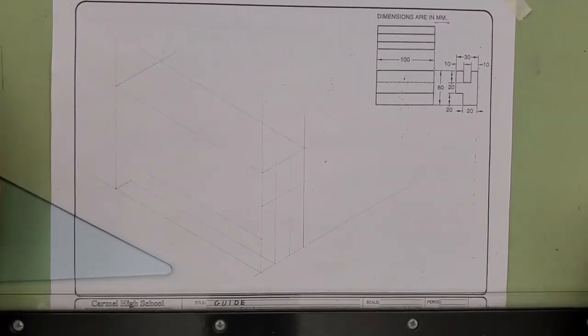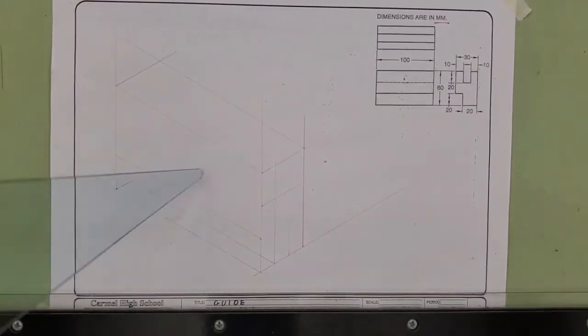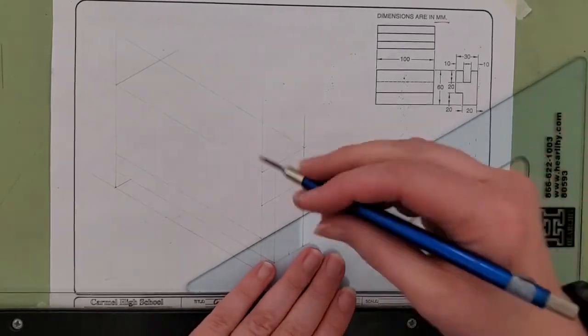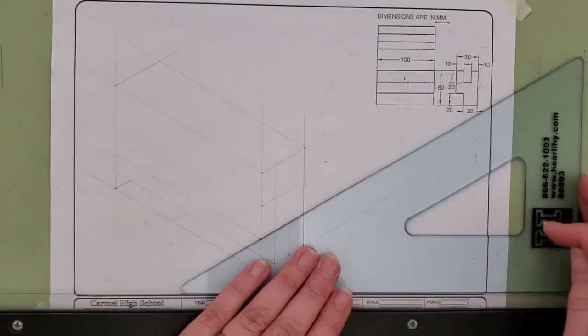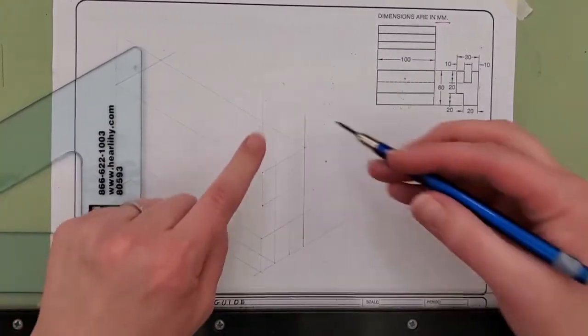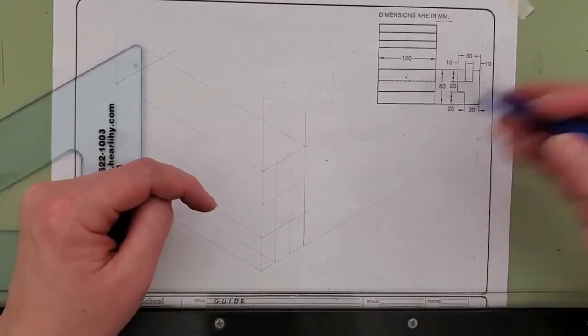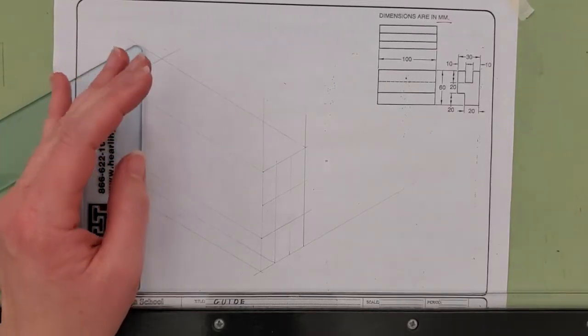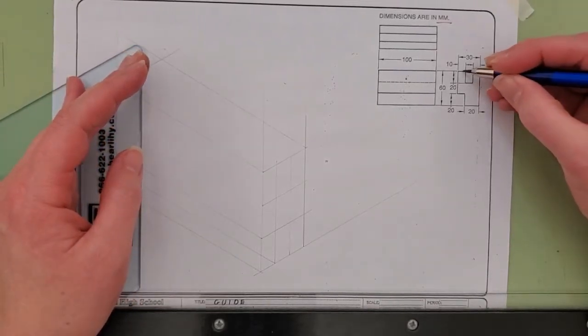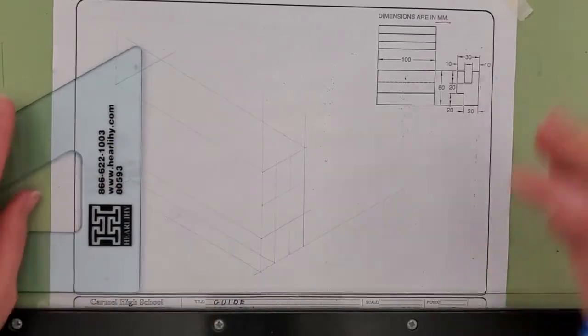I need to project it to the right also. So I've kind of divided this into a grid. So right now, things can get really confusing really fast. So I'm going to go ahead and darken in my object lines to make this shape on the right side view.